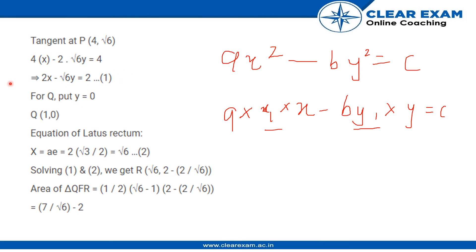And for Q we put y = 0 for that tangent equation. We get x = 1, so we get the value of Q to be equal to (1, 0).